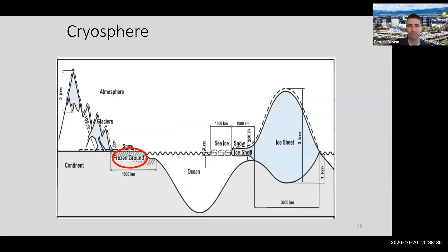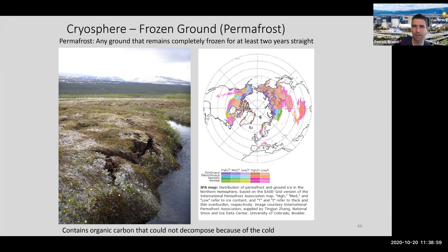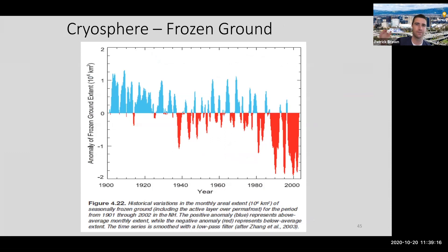Frozen ground - permafrost - is another piece. Permafrost has to be frozen for at least two years to count as permafrost. Ground that used to be semi-permanently frozen is no longer frozen as it gets warmer. We're seeing the area of frozen ground decrease - another piece of evidence going in the same direction that the Earth is getting warmer.